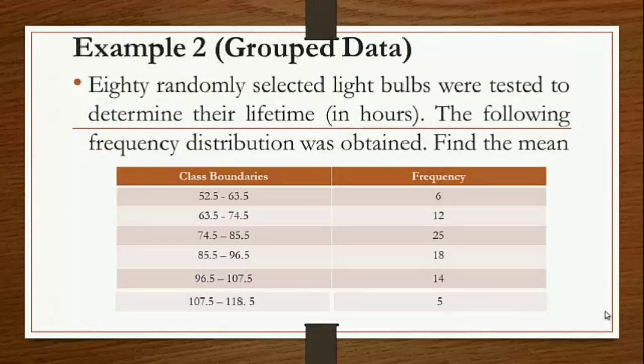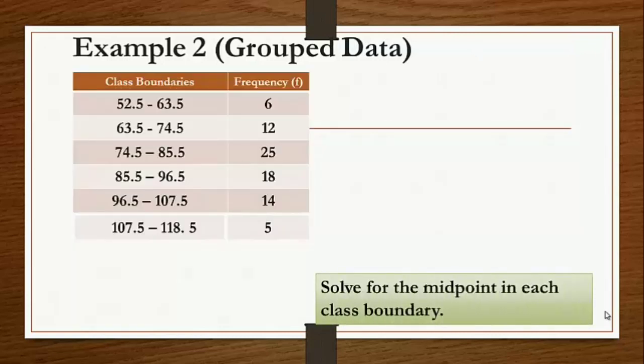Let us take this example. Eighty randomly selected light bulbs were tested to determine their lifetime in hours, and the following frequency distribution was obtained. We are given class boundaries and frequencies. Since the data are grouped, we are solving for the population mean. First, solve for the midpoint of each class boundary.